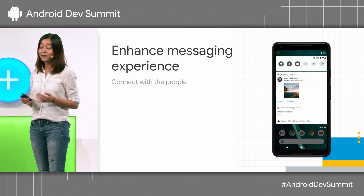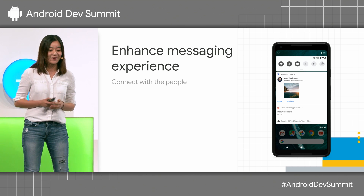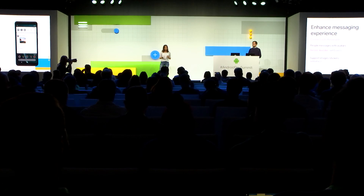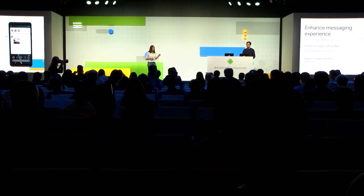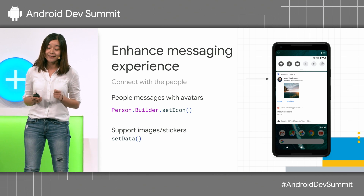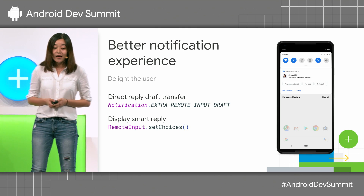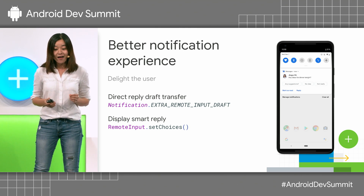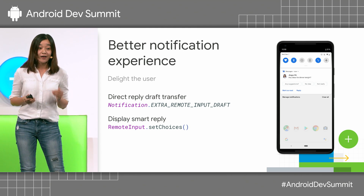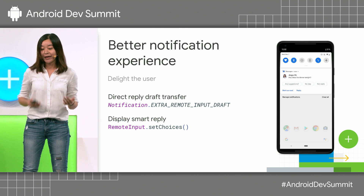Since the notifications users care about most are the ones connecting them with people they care about, we enhanced our messaging experience by adding a new Person class in API 28. If you're using messaging style in a notification, we've now moved the people's avatar to the left of the notification, and you can set that avatar using the setIcon method. We also added support for images and stickers in messaging notifications using setData. On Android 9, if a user accidentally taps a notification while replying, you can retrieve the draft from this extra and populate the response in your app.